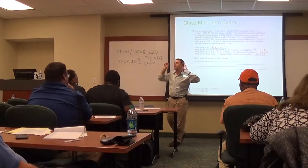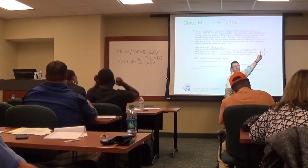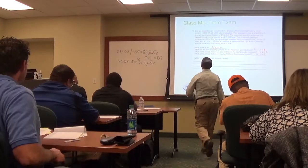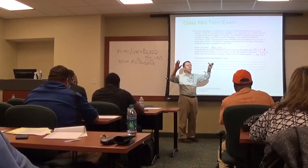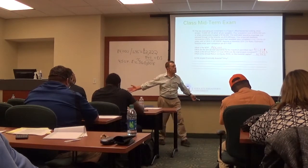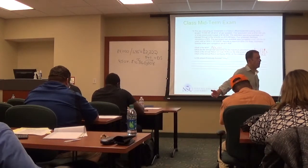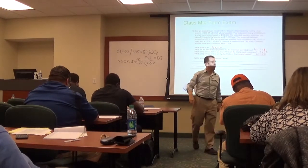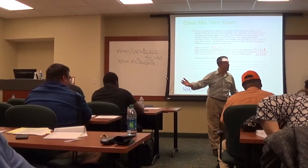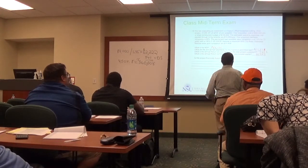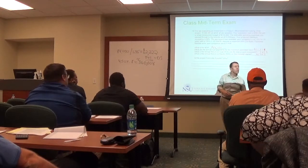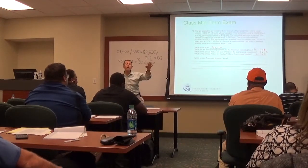Even though the debt service coverage ratio allowed us to spend $62,000 a year, the lender really won't let us pay more than $51,000 because they're capping at 80% of cost. With $360,000 as the amount I could borrow, I put that in my calculator as the present value, put in the other loan terms, and that's how I get my $51,000 annual debt service.